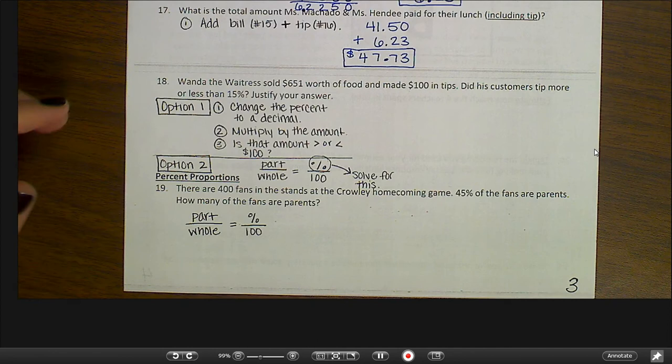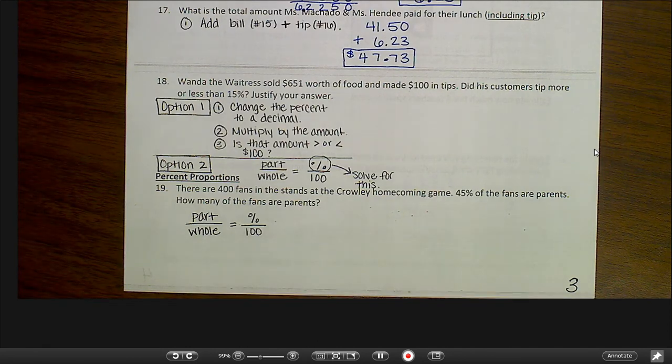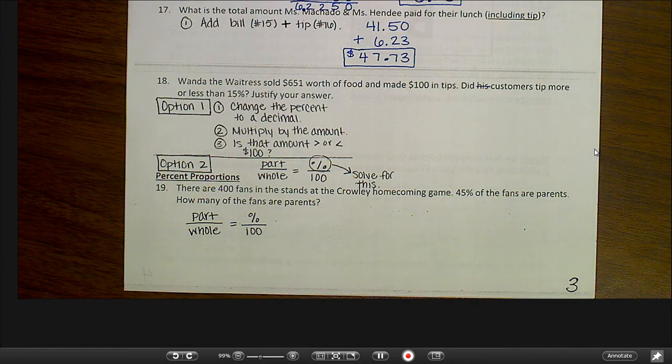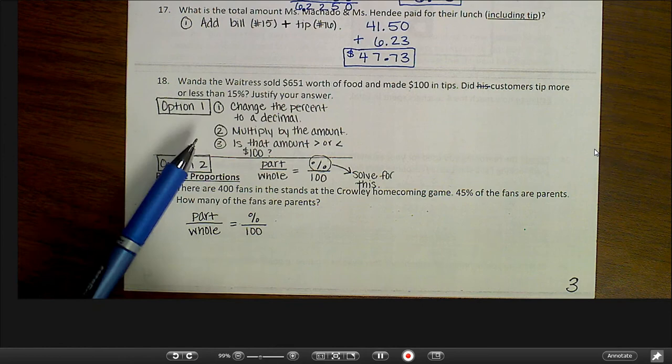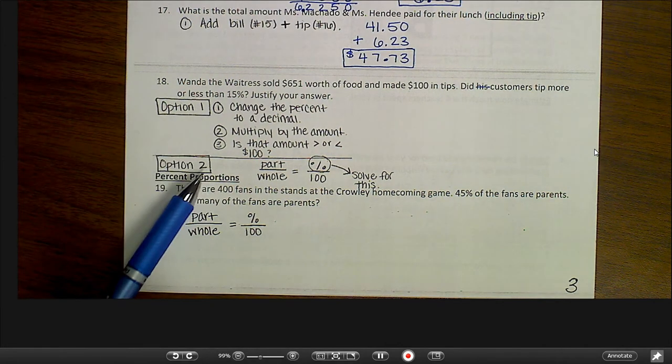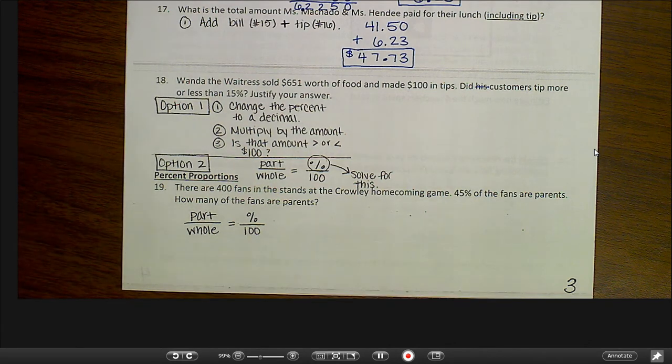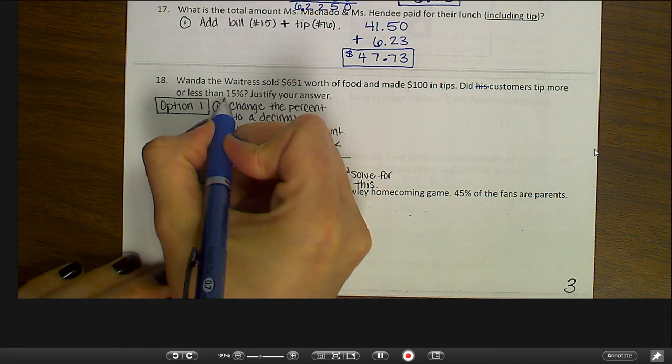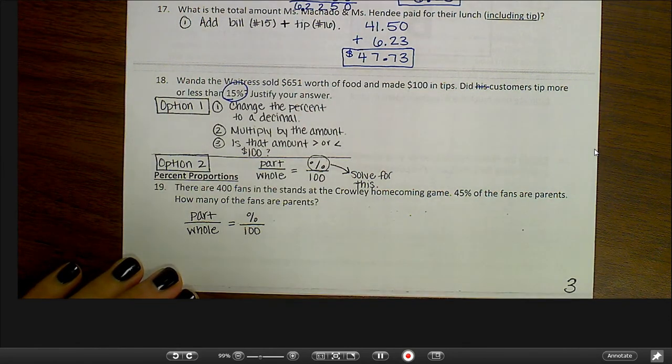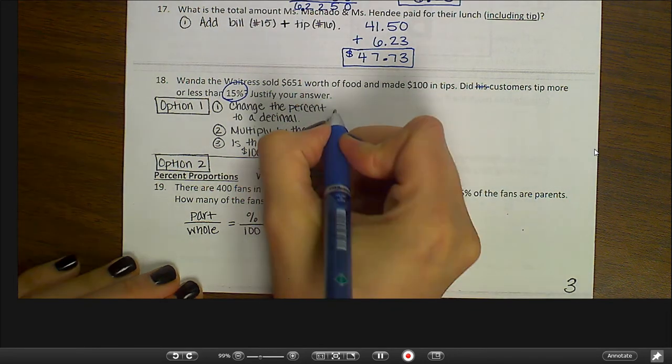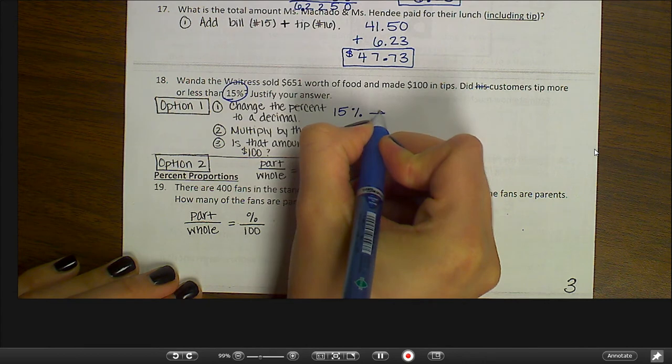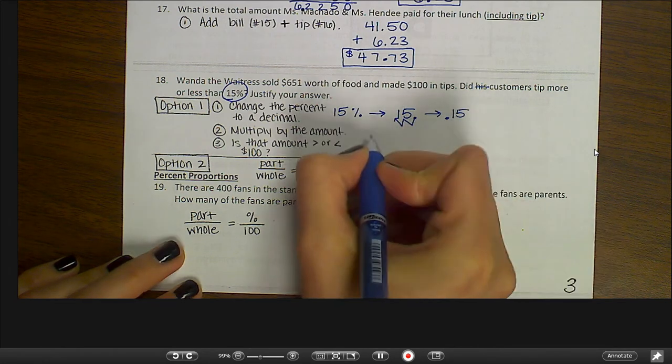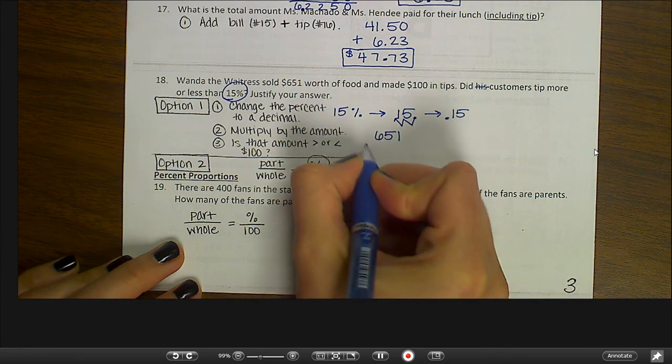Number 18. Wanda the waitress sold $651 worth of food and made $100 in tips. Did her customers tip more or less than 15%? And justify your answer. So we have a couple of options. We can either solve using our tip method or we can use a percent proportion. And I'll show you both ways. So for option one, you don't actually need to calculate the $100 in there. You just need to figure out, okay, I need to know if it's more or less than 15%. Let's figure out what 15% would be for a tip. And then we'll compare it to $100. So change that percent to a decimal. So drop the percent sign. Move the decimal two places to the left. And I end up with 15 hundredths. Then I'm going to multiply by the amount, 651 times 15 hundredths.